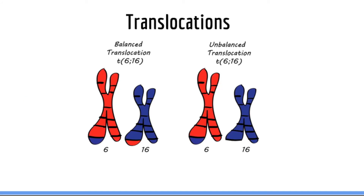Here we have two types of translocations — one is a balanced translocation and the other is unbalanced. We have chromosome 6 (red) and chromosome 16 (blue). We can see that a part of chromosome 16 is in chromosome 6 and vice versa. This would be considered a balanced translocation because there is no net gain or loss of DNA. On the other hand, in the unbalanced example, a part of chromosome 16 is on chromosome 6, however chromosome 6 is missing a piece that is nowhere in the genotype. This would be called an unbalanced translocation because there is a net loss of DNA.